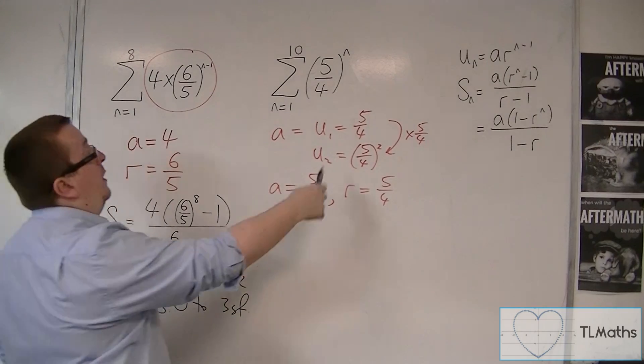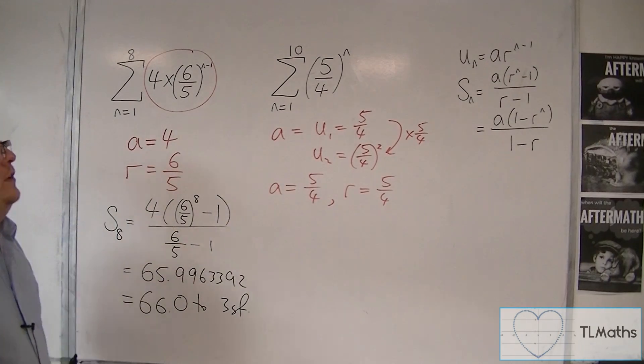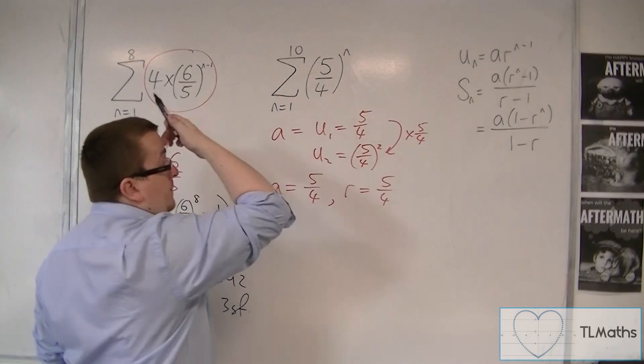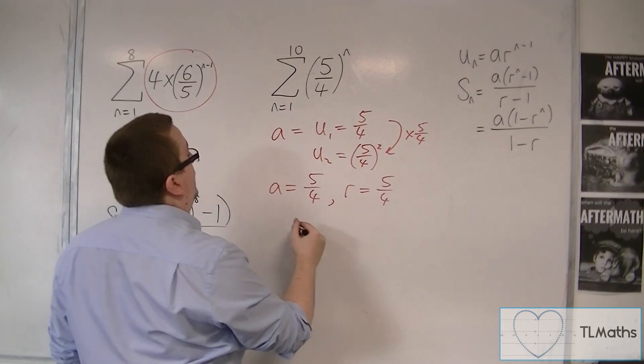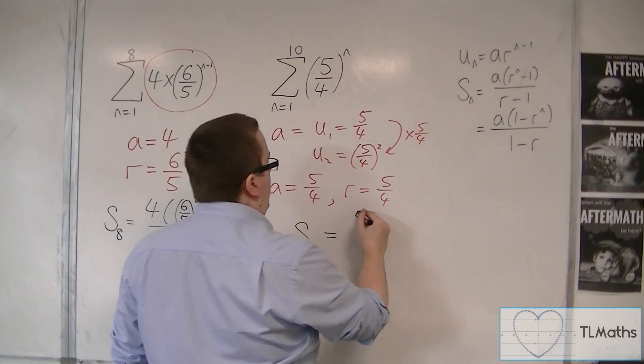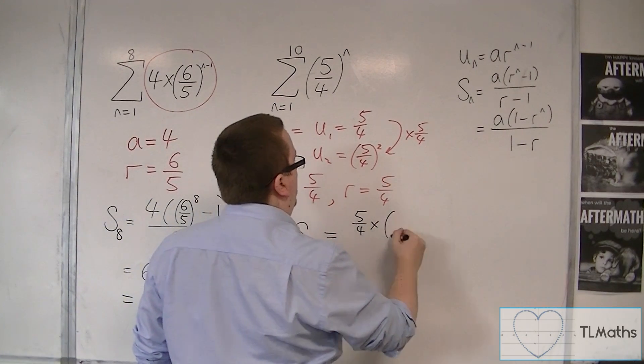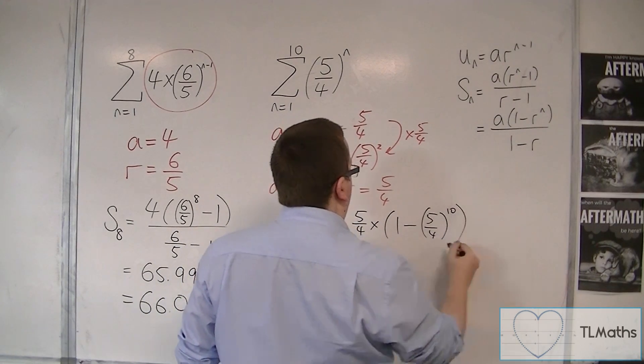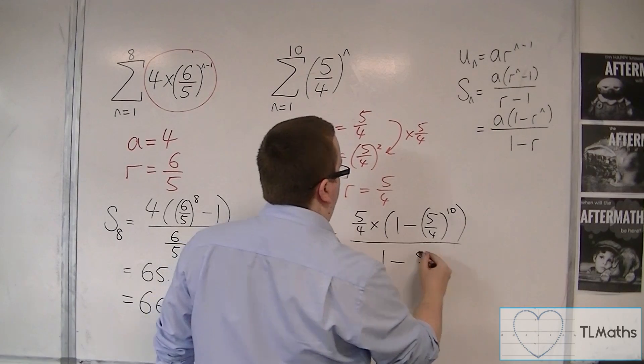Now, I might as well finish off this one and find the sum of the first 10 terms here. So I'm going to use the second formula. Okay, just mix it up a bit. So we've got s10 is equal to a times by 1 minus 5 quarters to the power of 10, all over 1 minus 5 quarters.